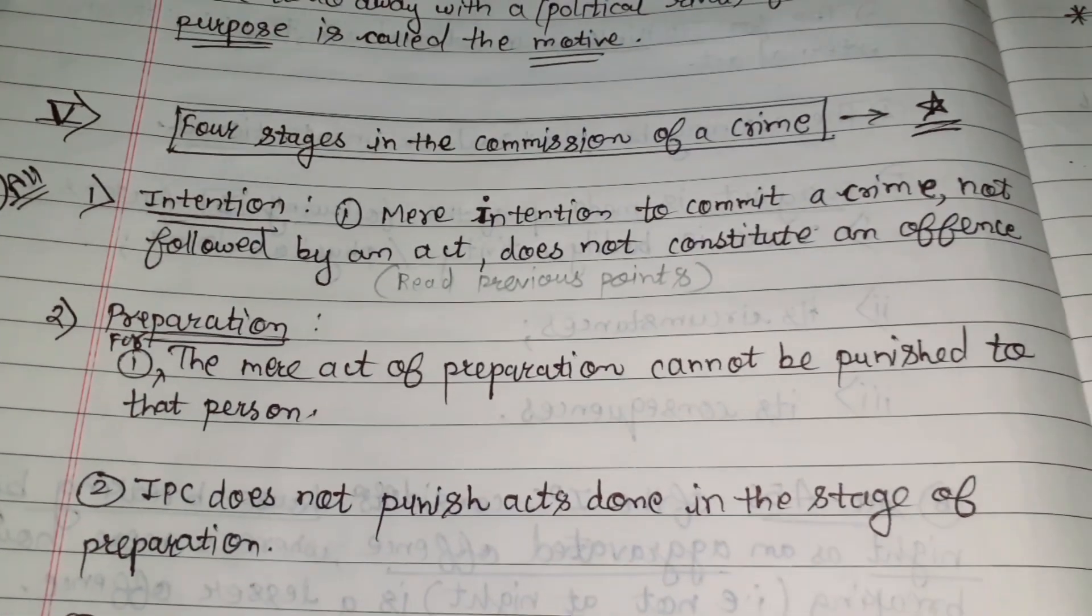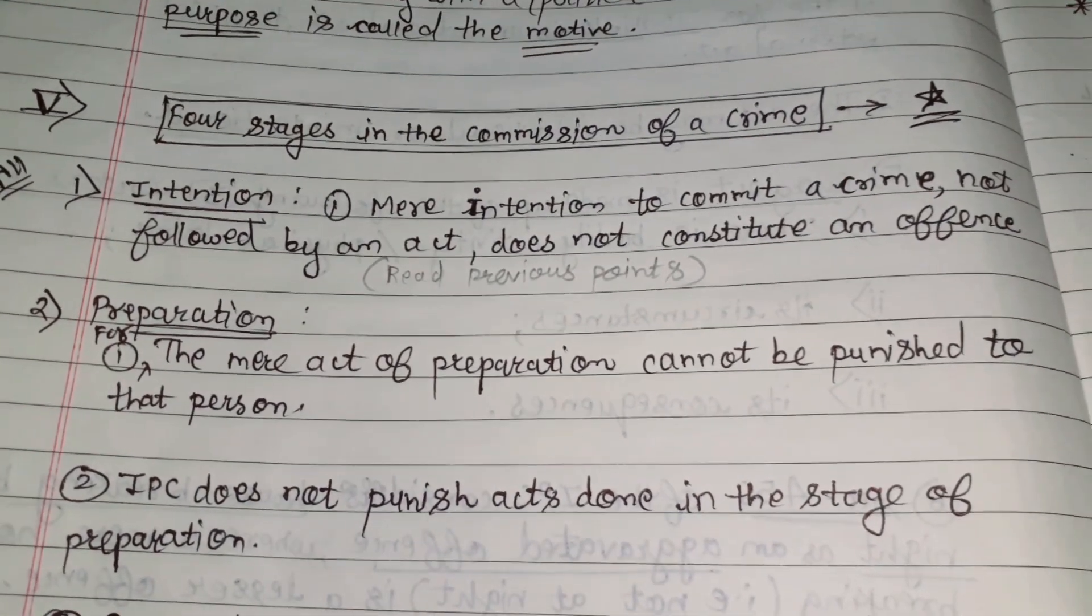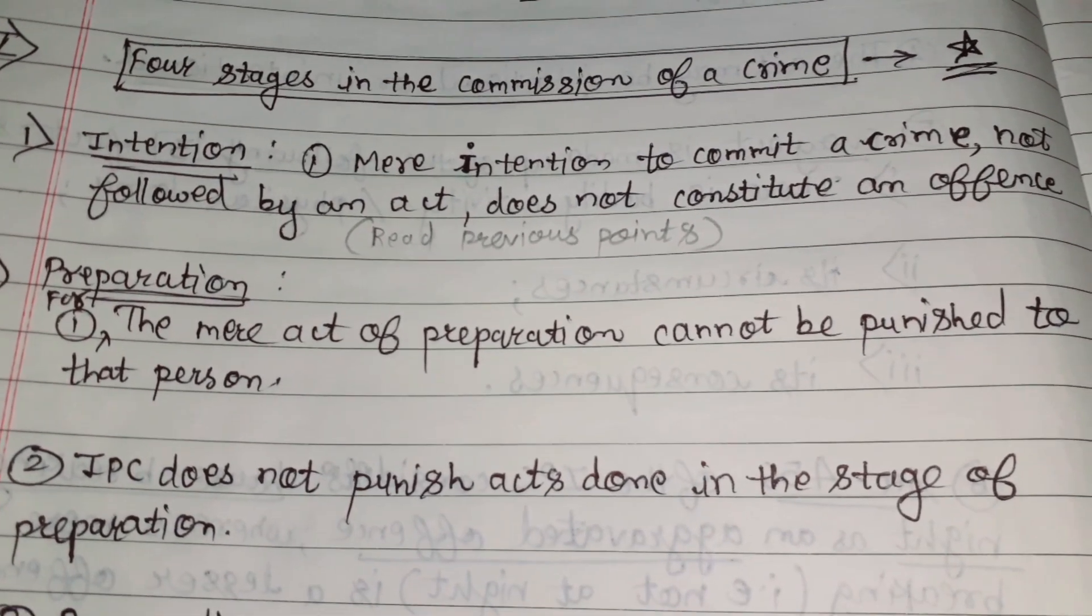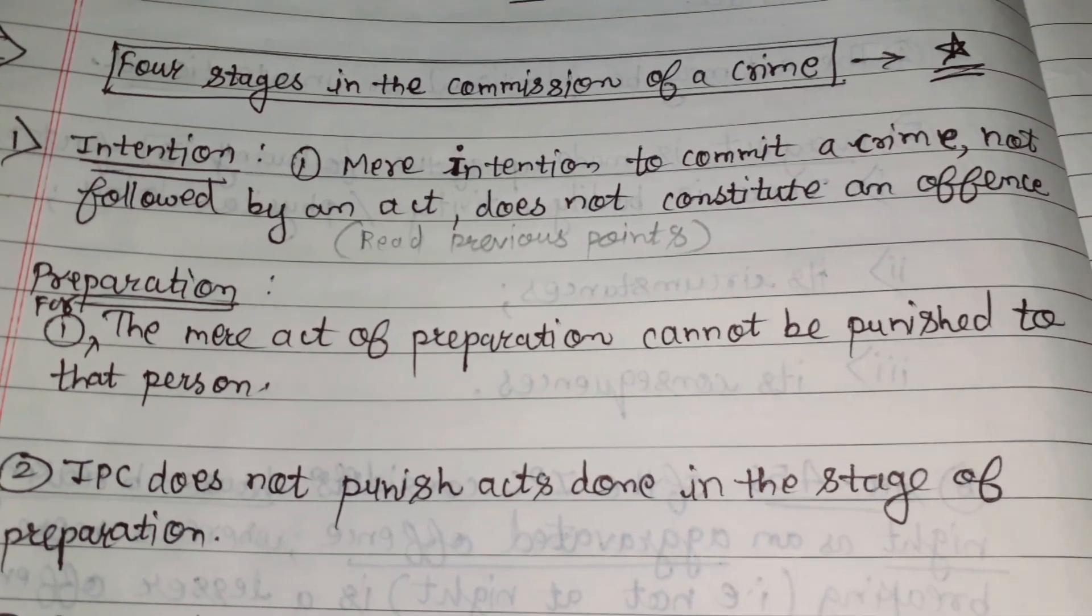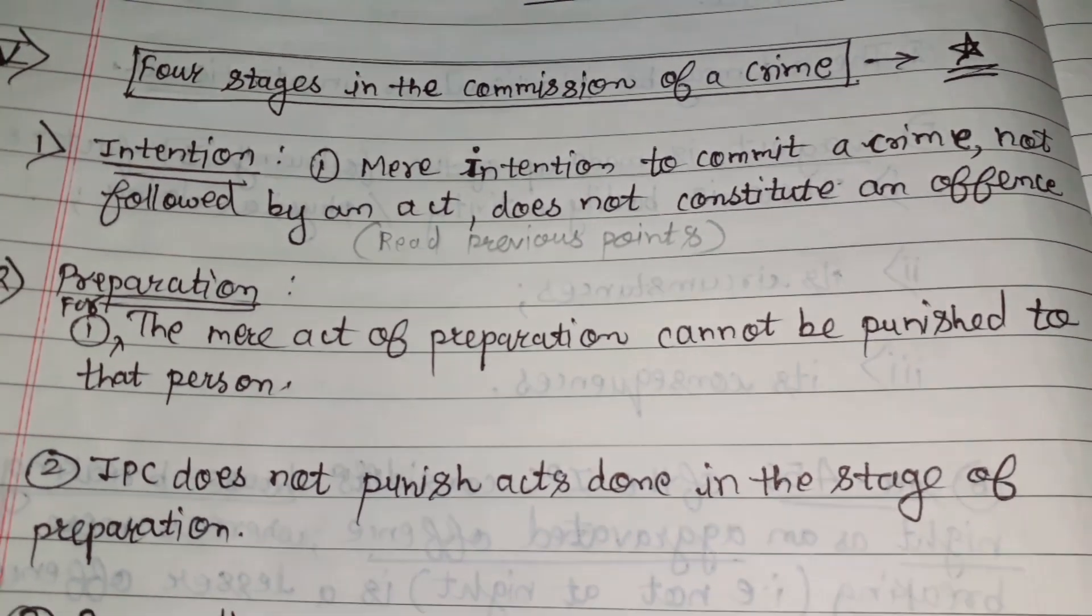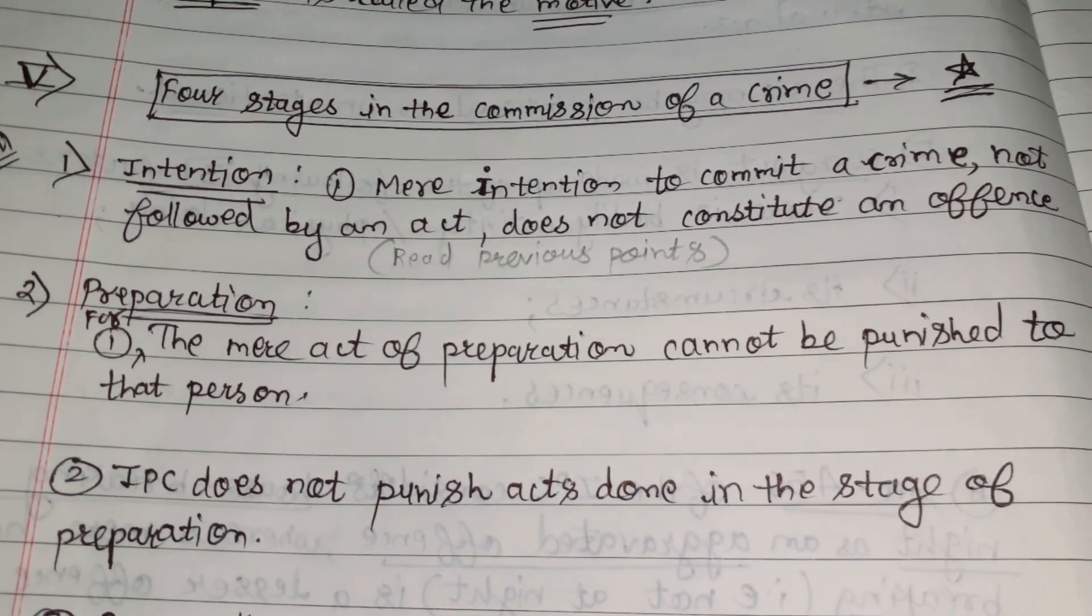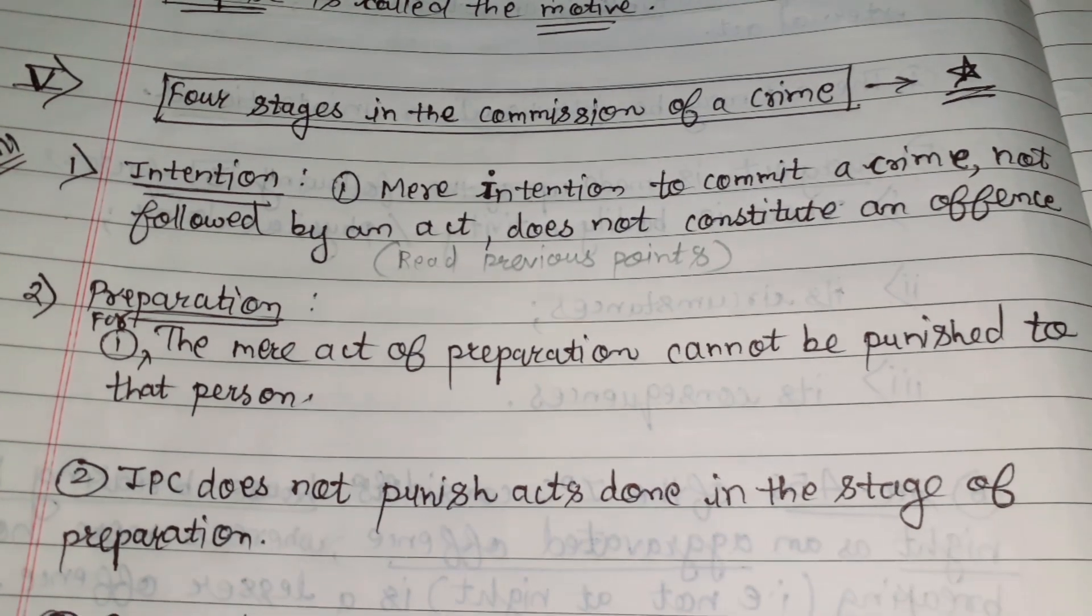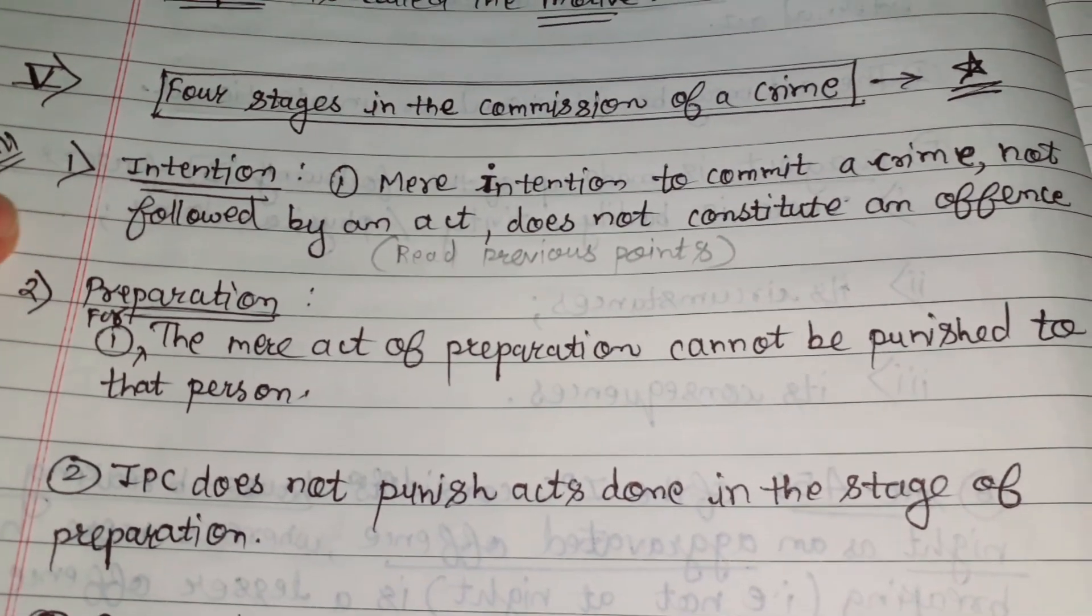First is intention. Mere intention to commit a crime not followed by an act does not constitute an offense. This means only the person has intention to do the crime but actually has not acted. That thinking will not be considered a crime because only the intention will not constitute a crime. A wrongful act is also necessary. This is the first stage, the intention.